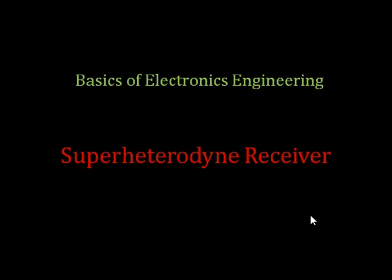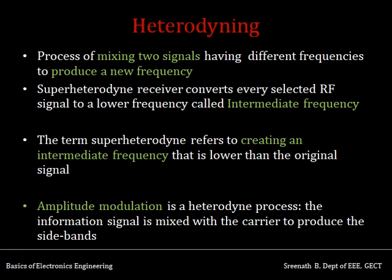The super heterodyne receiver works at the receiving station where you will be extracting the message signal out of the carrier signal. Heterodyne is a process of mixing two signals of different frequencies to produce a new signal — very similar to amplitude modulation where you mix the message signal and the carrier signal. The new signal produced is known as the intermediate frequency signal, and the term super heterodyne refers to creating this intermediate frequency signal.